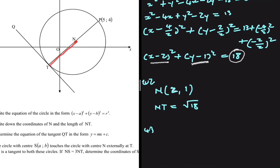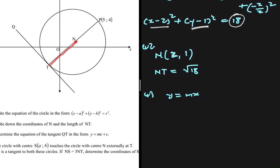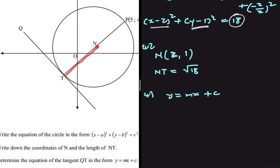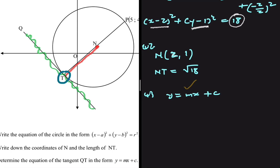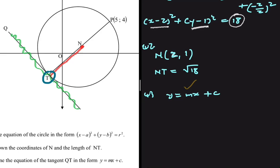In 4.3, determine the equation of the tangent QT in the form y = mx + c. We need to find the gradient of QT. To find c, we need a point on the line QT, so let's find the coordinates of T. We'll use T's coordinates to find the gradient and then c.